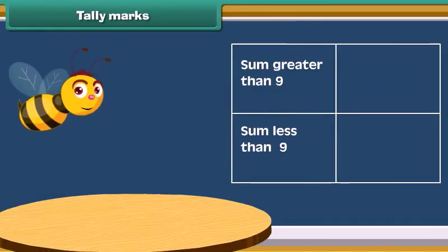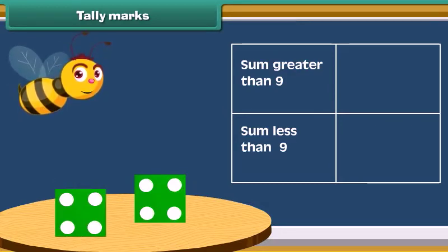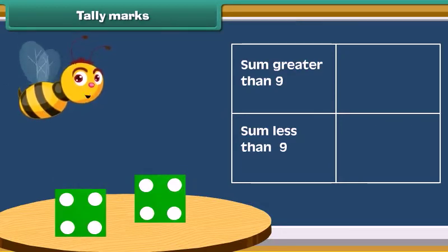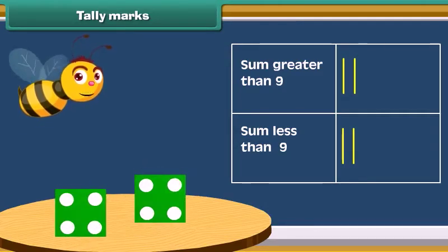Now let's do an activity. Take two dice, throw both the dice together, and note how many times the sum of numbers on both dice is greater than 9.